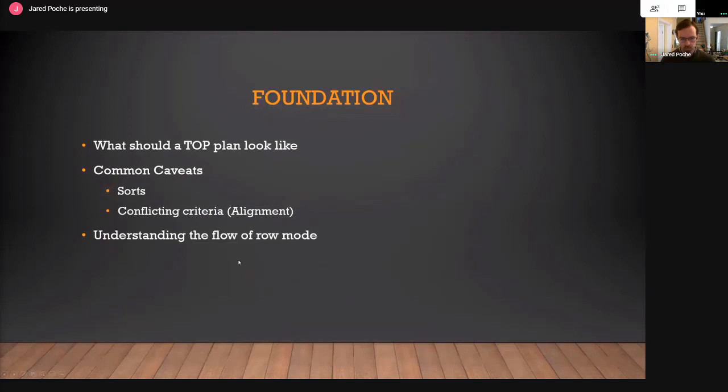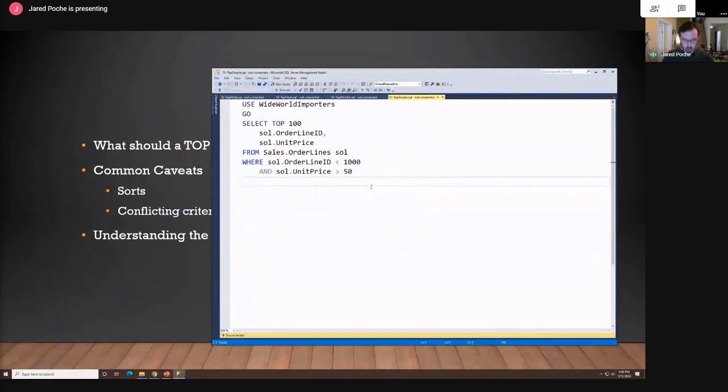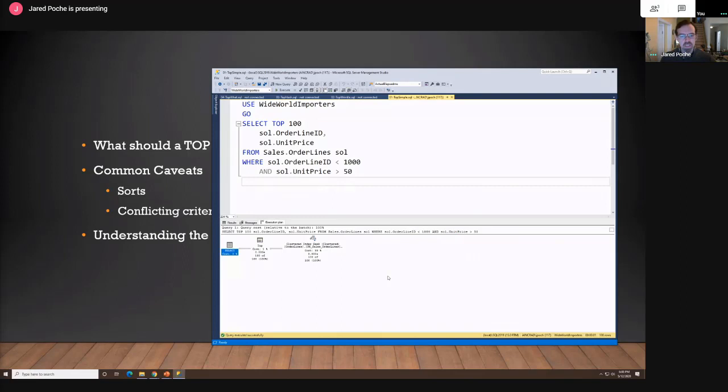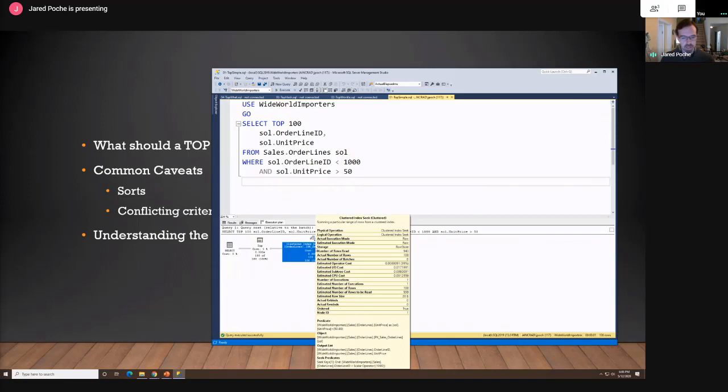I've got a few simple examples lined up. I'm using the Wide World Importers database, and I'll make sure the scripts are available for anyone interested. Here's a simple example based on the order lines table — I've got a WHERE clause returning TOP 100 rows based on criteria on the order line ID and the unit price. This is kind of what I expect to see. This is the good case — this is what I want my execution plan to look like. We're doing an index seek.